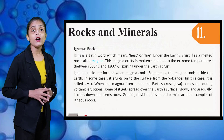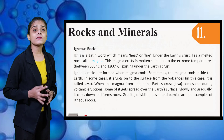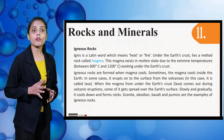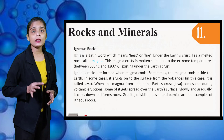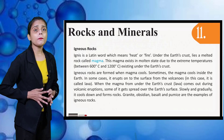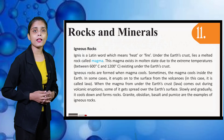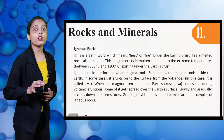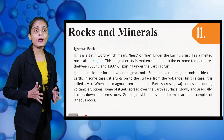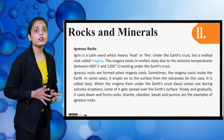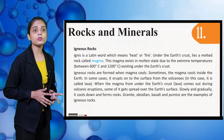Sometimes the magma cools inside the earth. In some cases, it erupts on the surface from volcanoes. In this case, it is called lava. When the magma from under the earth's crust — that is, lava — comes out during a volcanic eruption, some of it gets spread over the earth's surface. Slowly and gradually, it cools down and forms rocks.